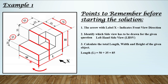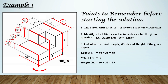Now the width — width is already given directly in a single dimension here, that is 70, so width will be 70 mm. For the height, this starts from bottom up to the top surface, and from this top surface again to the top end. So adding these values: 20 plus 35, the total height will be 55.